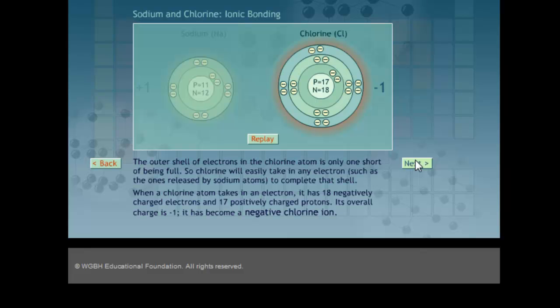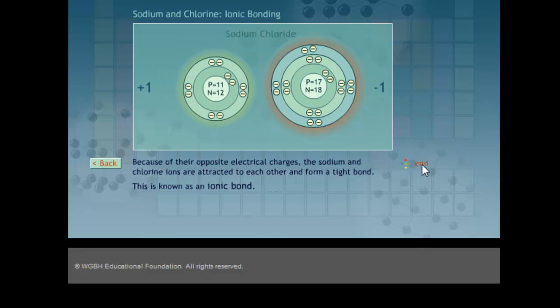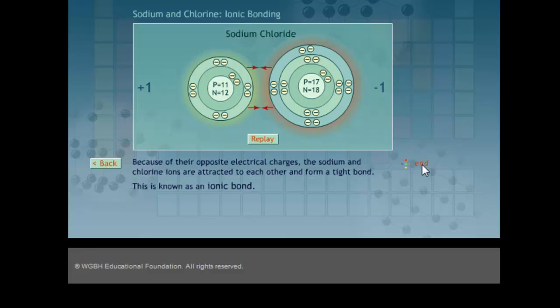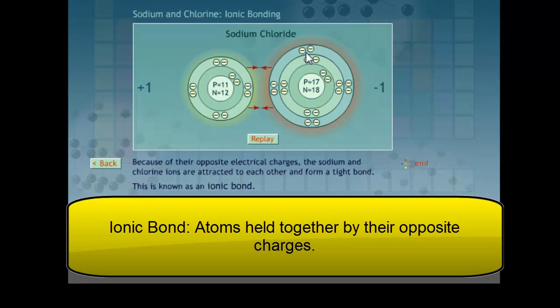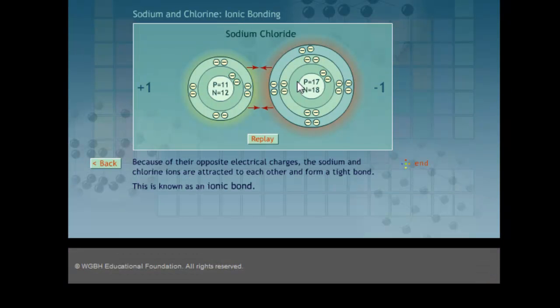But now they're opposite charges. You've got a positive charged sodium. You've got a negatively charged chlorine. Their opposites are going to attract and cause them to bond together to make that table salt. This is an ionic bond. That electron is not being around the sodium anymore. It is held together to the chlorine.